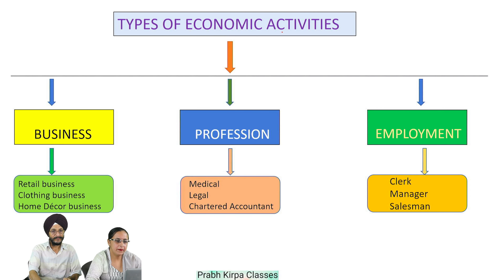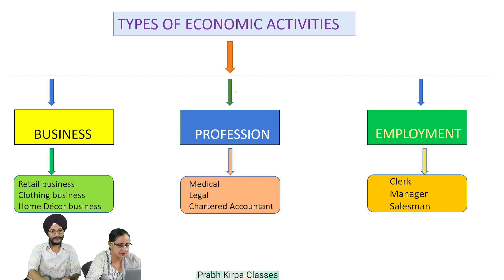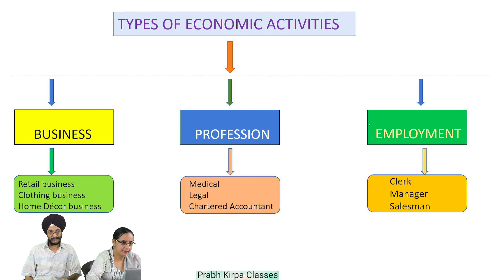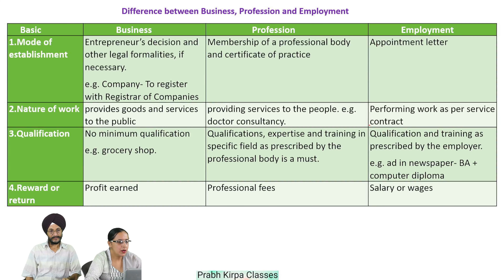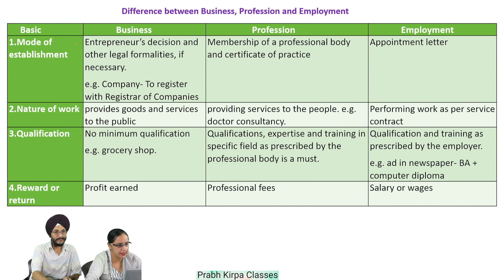Types of economic activities. In this chart, it has been shown that economic activities are of three types: Business, Profession, and Employment. We will understand the difference between business, profession and employment.